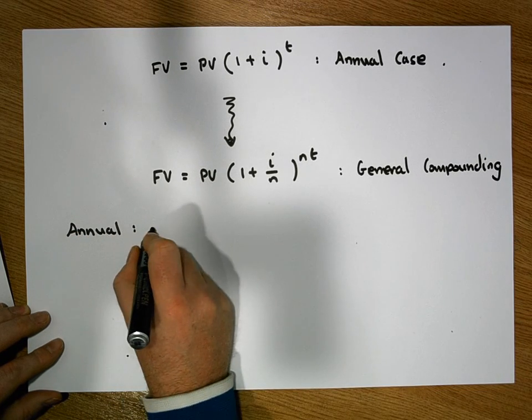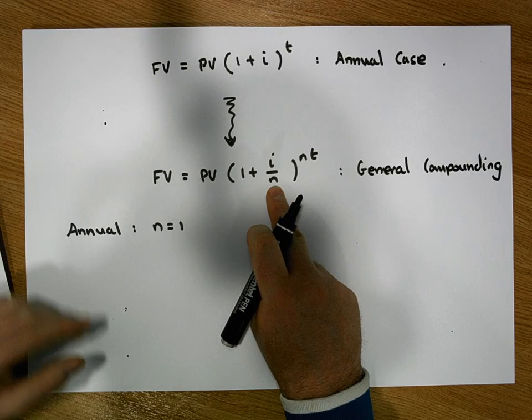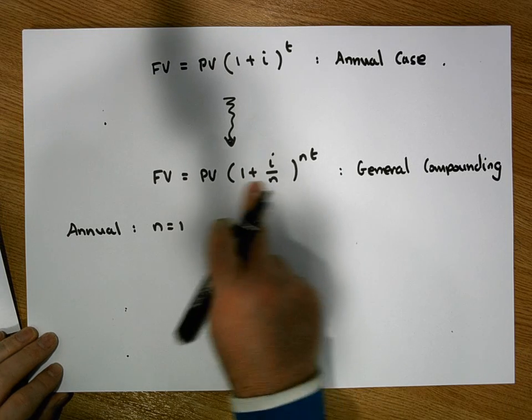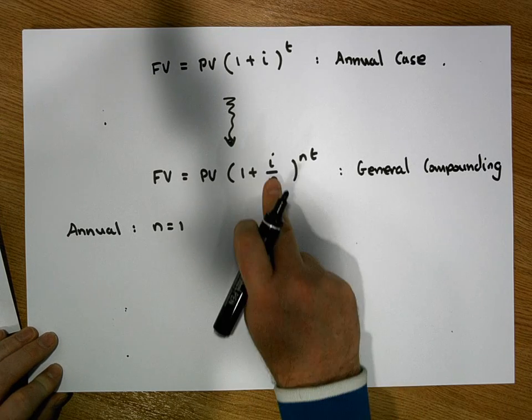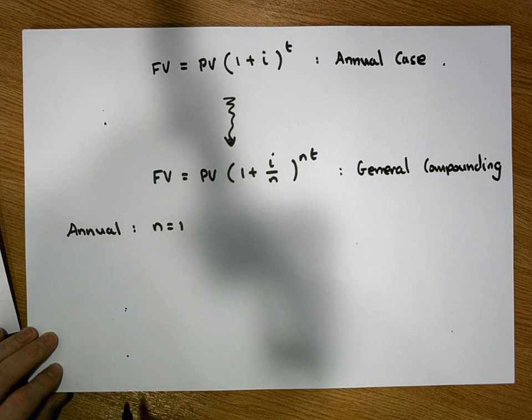That means N is equal to 1. And you can see that when N is equal to 1, it means that there's only one compounding in our periods of time or in our years. So this formula here reduces down to this formula here. Because I over 1 is just I. 1 times T is just T.